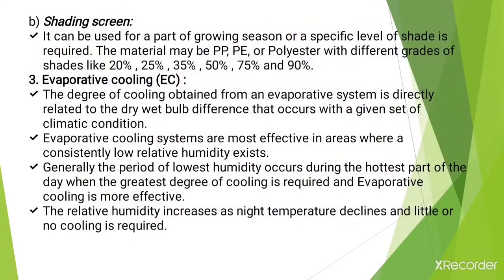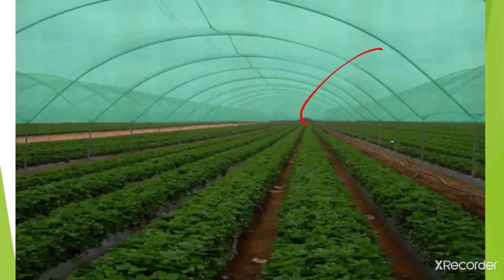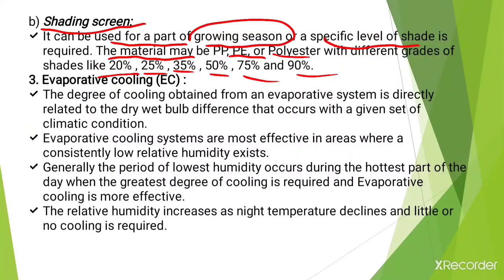The shading screen can be used for a part of the growing season or when a specific level of shade is required. The material may be made up of PP (polypropylene), PE (polyethylene), or polyester with different grades of shading like 20 percent, 25, 35, 50, 75, and 90 percent. Here is an example of the use of a shade net.